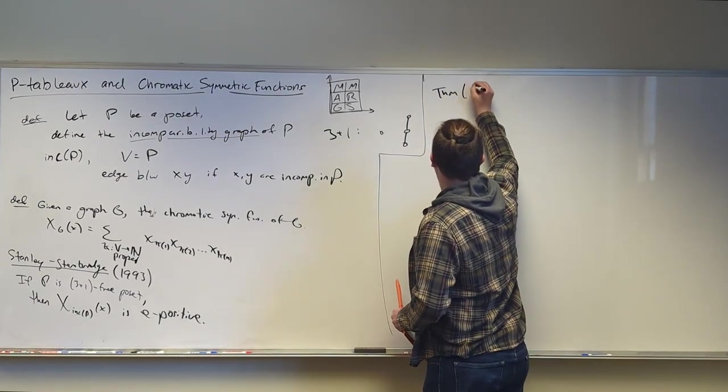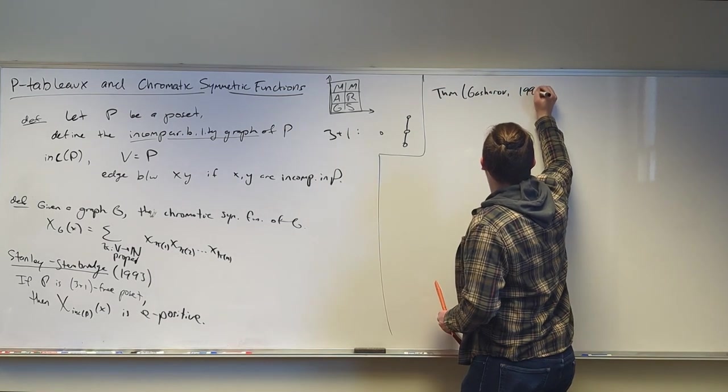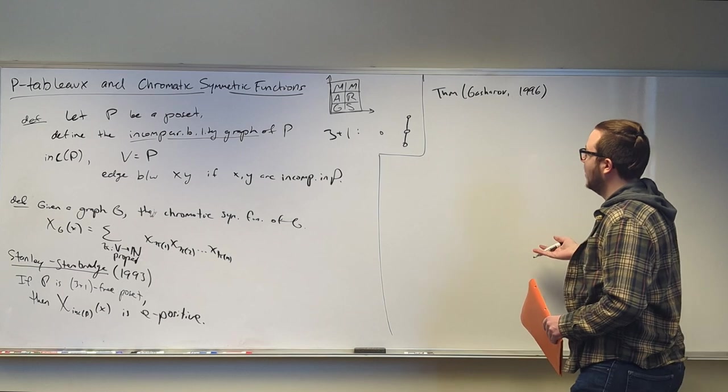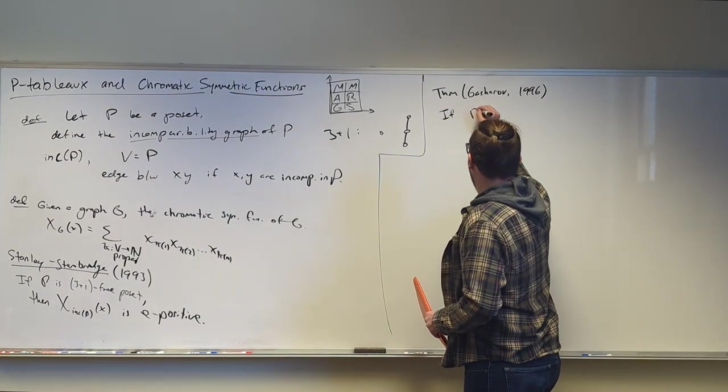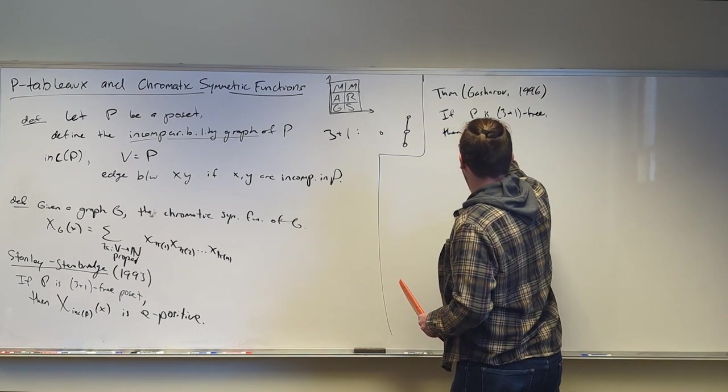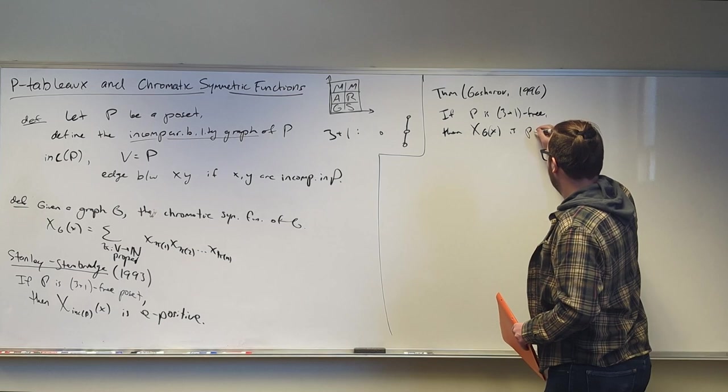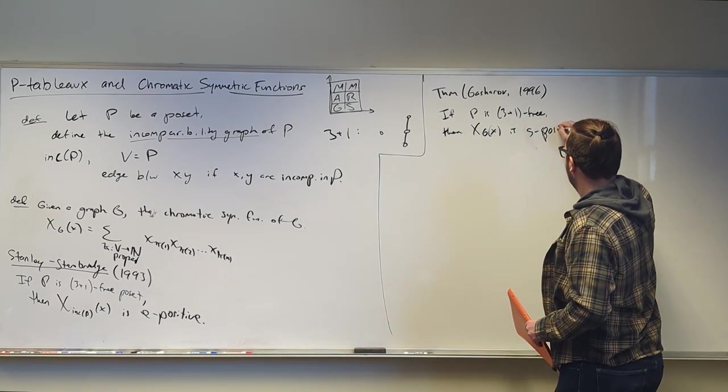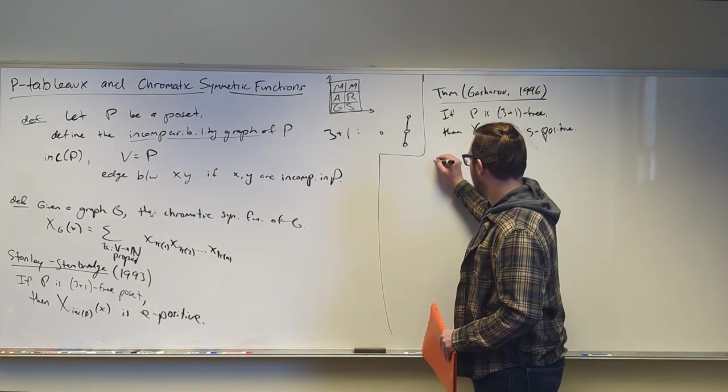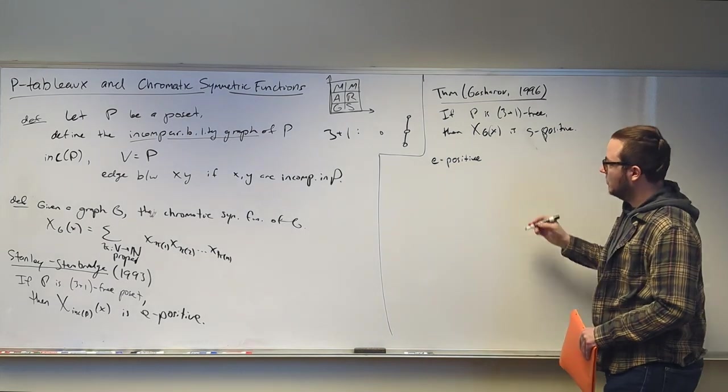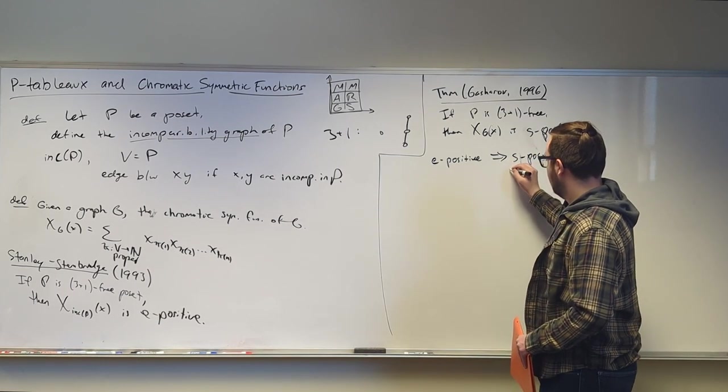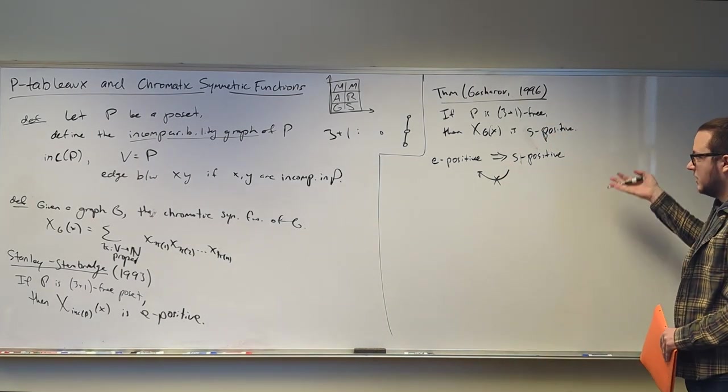So one theorem, due to Gasharov in the year of my birth, 1996, found that, okay, we haven't proven that they're E positive, but they're almost as good. They are S positive, so if the poset is 3 plus 1 free, then the incomparability graph, X of G, is positive when expanded in the Schur basis. So we're going to write S positive. Something from symmetric function theory, so E positive, if a symmetric function is E positive, that implies that it is S positive, but not necessarily the other way. It's not an implication. So having S positive does not give us that it's E positive.